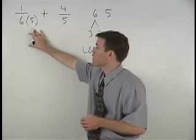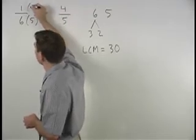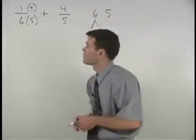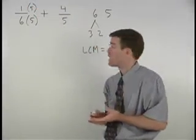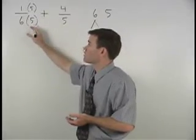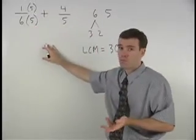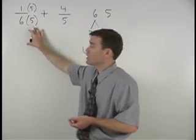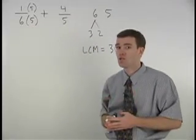However, if we also multiply the numerator of the fraction by five, we're actually multiplying the fraction by five over five, which is one. And when we multiply anything by one, it doesn't change its value.